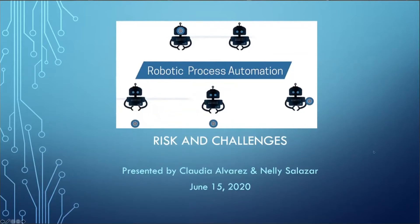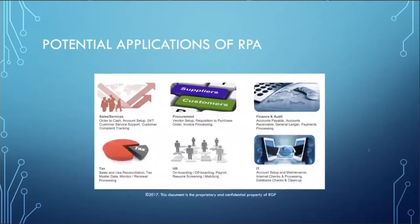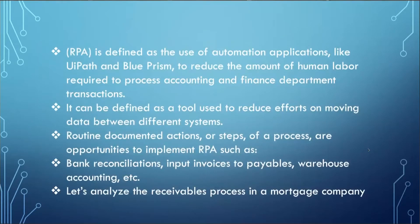Good afternoon, everyone. Nellie and I will be presenting on the risks and challenges of robotic process automation, commonly known as RPA. It is a computer software that allows businesses to execute predefined activities and complete autonomous processes. It's a combination of processes, activities, and transactions that are unrelated but work together to deliver a result or service without human interaction.